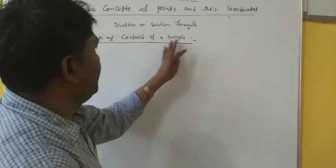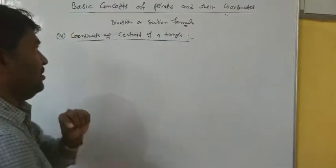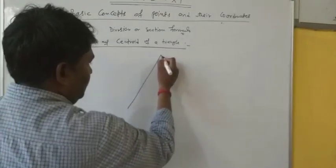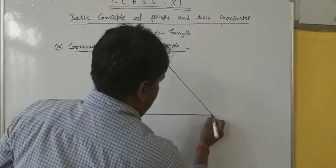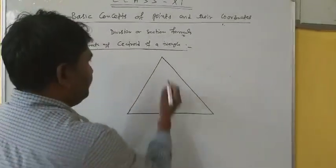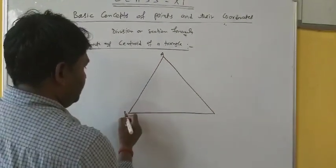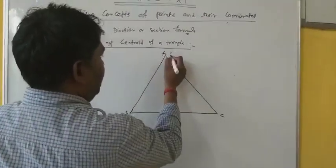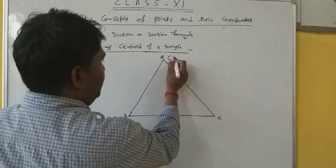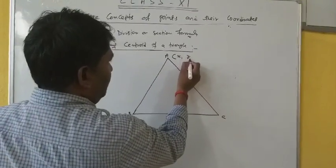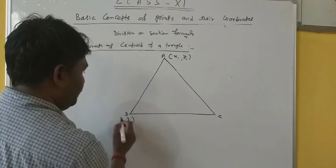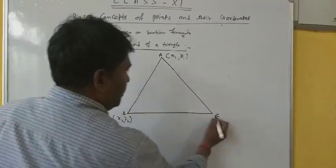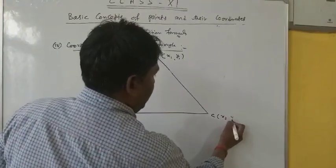Coordinate of Centroid of a Triangle. If there is a triangle ABC having their coordinates of vertices as X1, Y1 and X2, Y2 and X3, Y3.